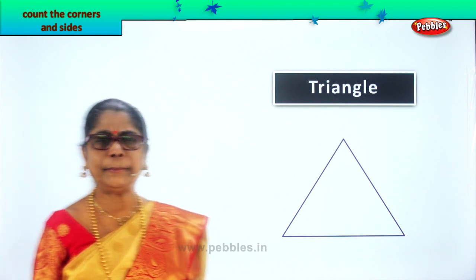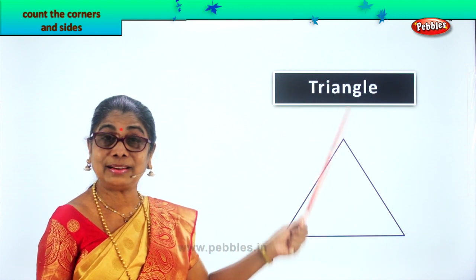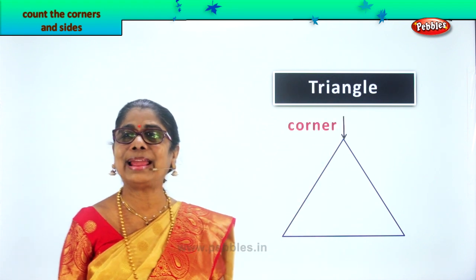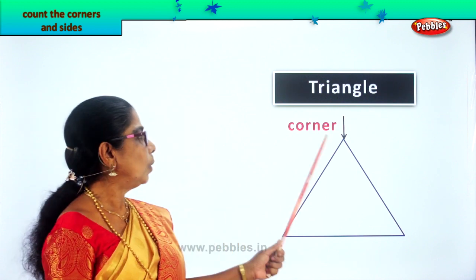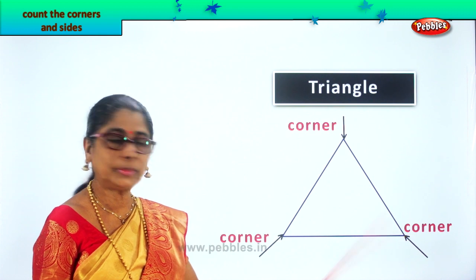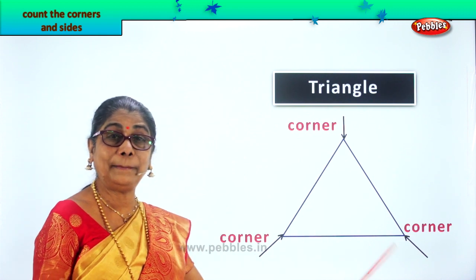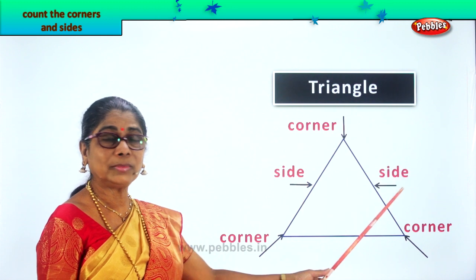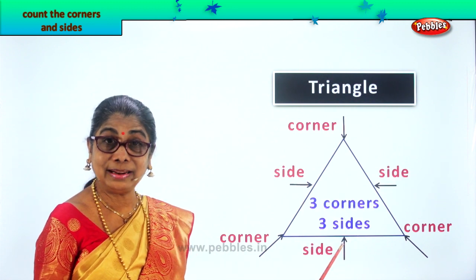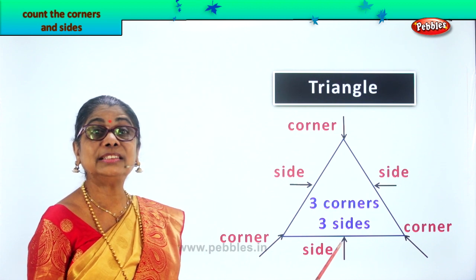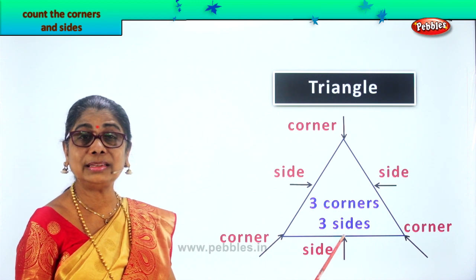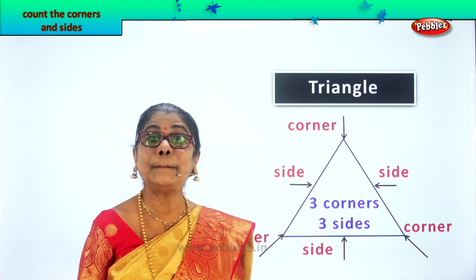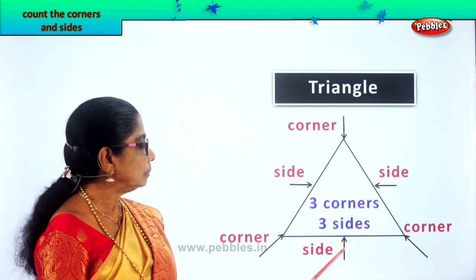Here we are. What shape is this, children? Triangle. This is another plain figure — a triangle. How many corners does the triangle have? Let's count: one, two, three. A triangle plain figure has three corners. And how many sides? One, two, three. A triangle plain figure has three corners and three sides. Did you enjoy counting the corners and sides?